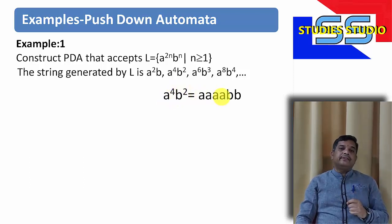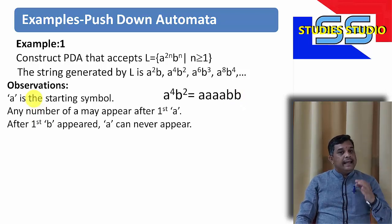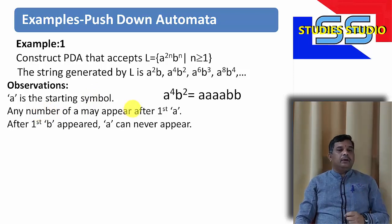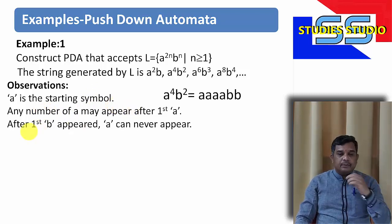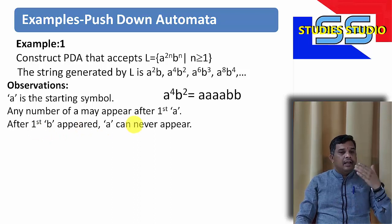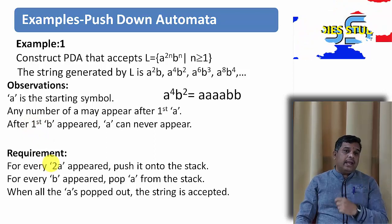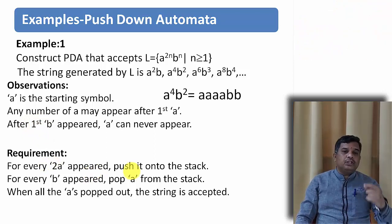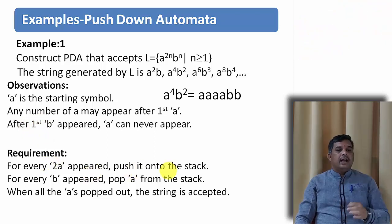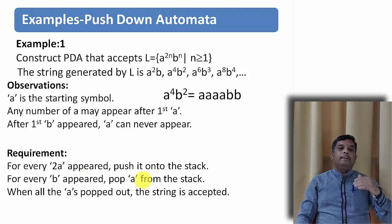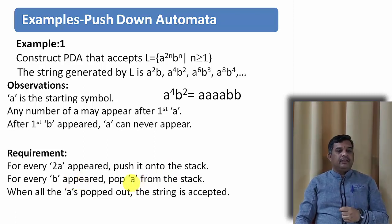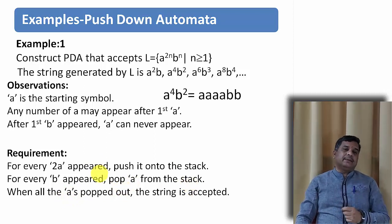There are 4 a's followed by 2 b's. Now let us see the observation. A is the starting symbol here, and after the first a we can have any number of a's. But after the first b appears, we can never have any a's. The requirement is: for every 2 a's that appear, we need to push a single a onto the stack. And whenever a b appears, we will be popping that particular a. So when all the a's are popped out, we can say the string is accepted.